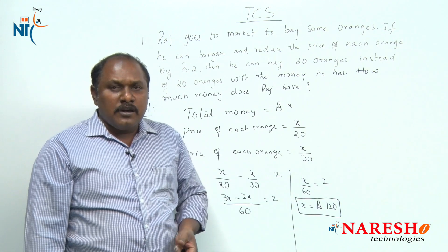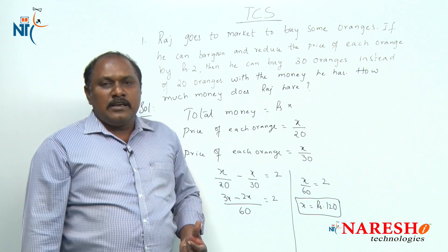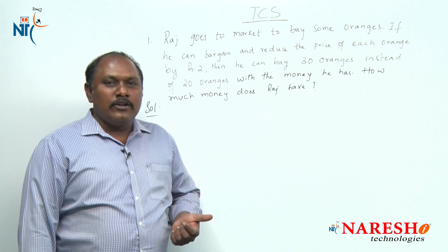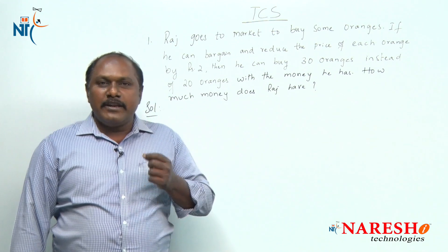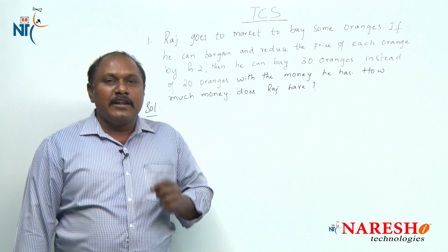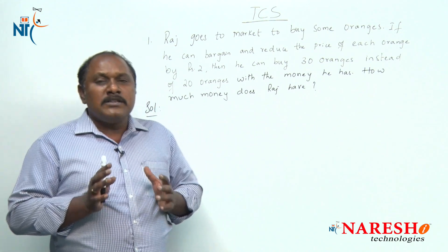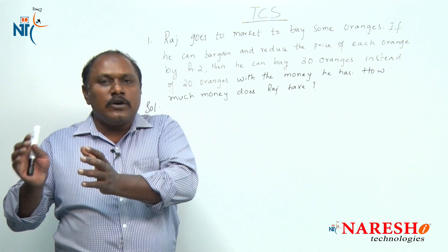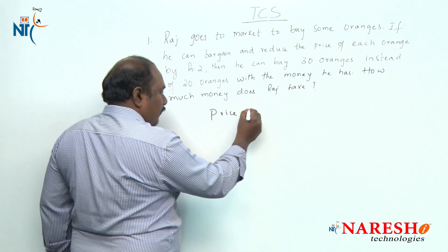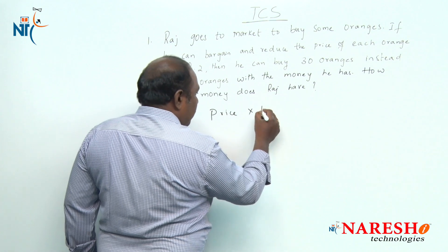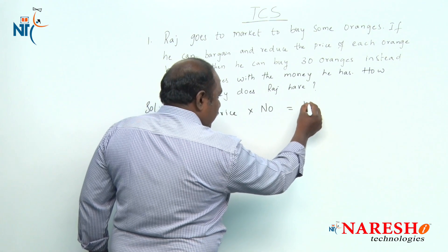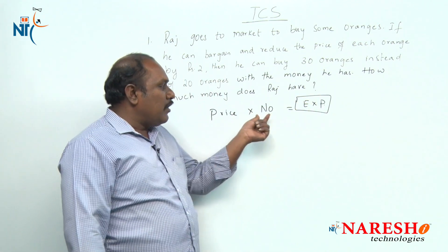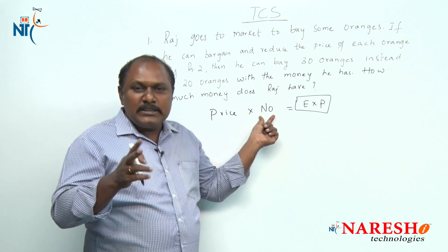In both methods, what we have used? We have used variables. Now let us see how we can solve this particular problem without using variables. Let us look into the third method. The general common sense is that the price of each article multiplied by the number of articles gives us the total expenditure. When this expenditure is constant, then price and the number of articles should be inversely proportional to each other.